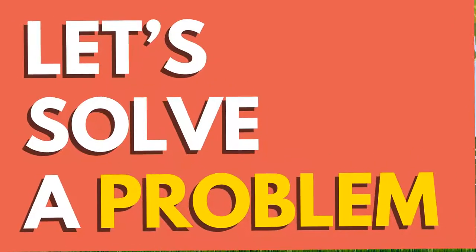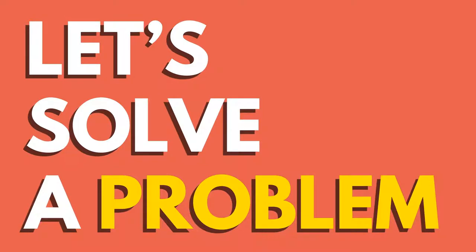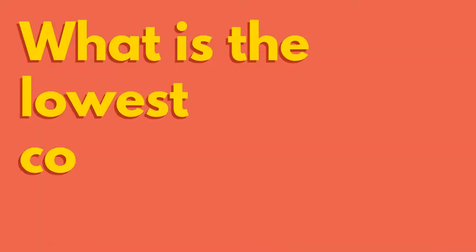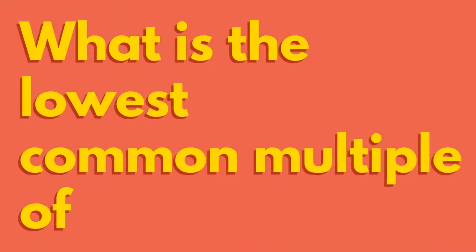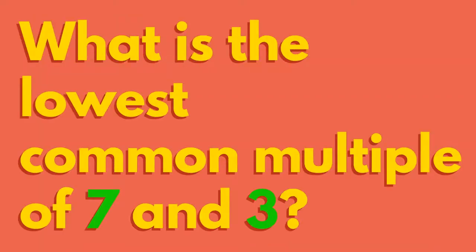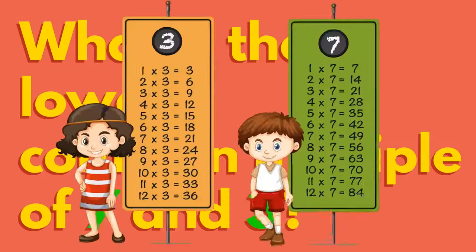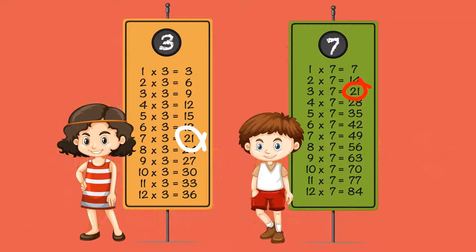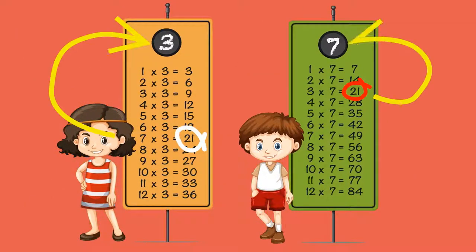Let's solve a problem ourselves now. What is the lowest common multiple of 7 and 3? What do you notice about the lowest common multiple of two prime numbers?